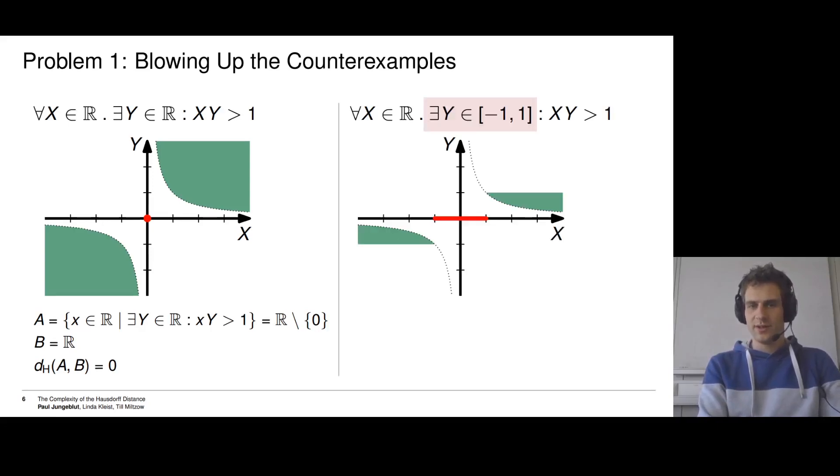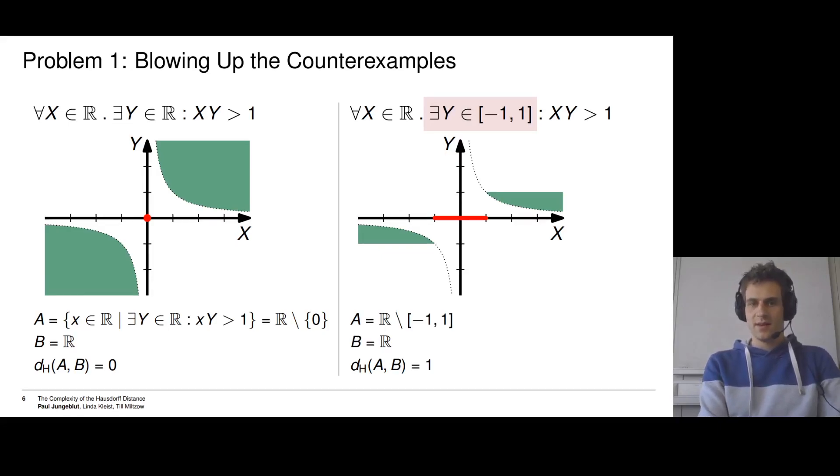How could we fix this? The idea is to impose range restrictions on the y variable. If we don't allow arbitrary values for y, but just ones between -1 and 1, for example, then we don't find any y for any x between -1 and 1, because the y would need to be either smaller than -1 or bigger than 1. So in this case, we increased the set of counterexamples. We have blown up the counterexamples. In this case, A is still all x for which there is a y, but this is now the real numbers minus the interval from -1 to 1, while B is still the whole real numbers. And this is big enough now, the difference between the two sets, such that they have a Hausdorff distance strictly greater than 0.